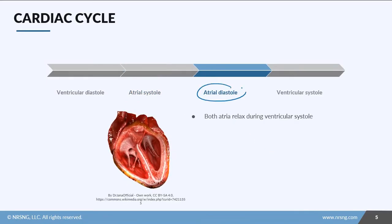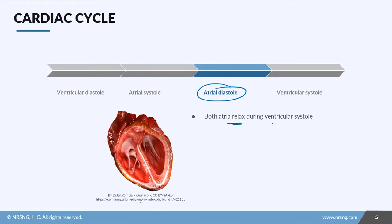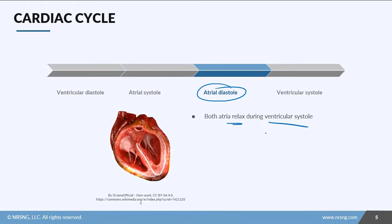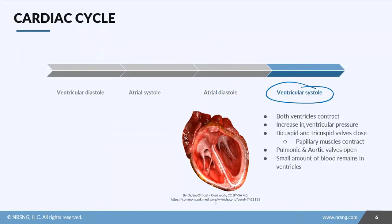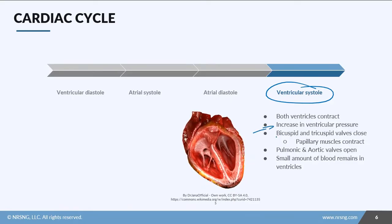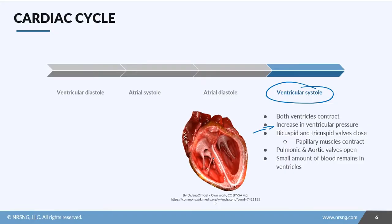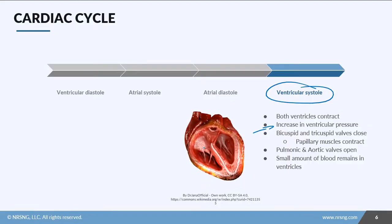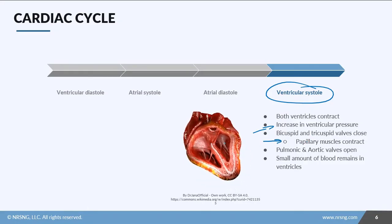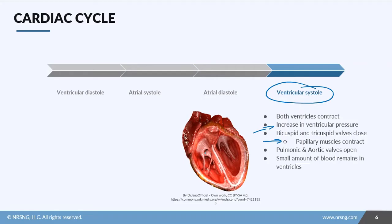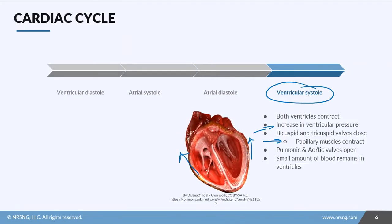Now we're in atrial diastole — both atria are going to relax. At the same time, you have the squeezing of the ventricles. With ventricular systole, both ventricles contract, causing an increase in ventricular pressure. The bicuspid and tricuspid valves — you can see them here — get smaller as they squeeze and close, supported by the papillary muscles, preventing backflow from the ventricles back into the atria.